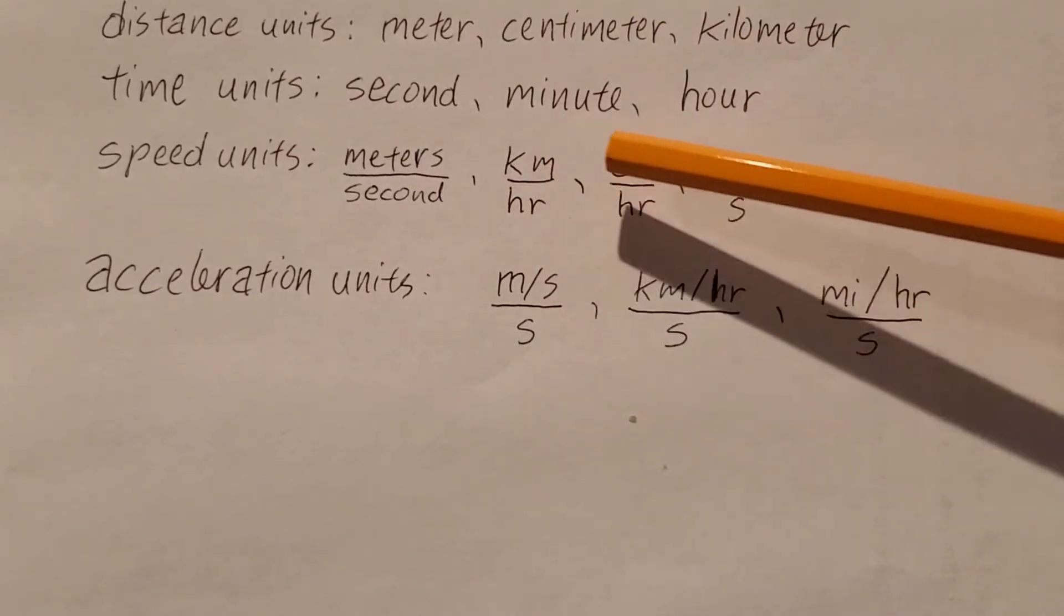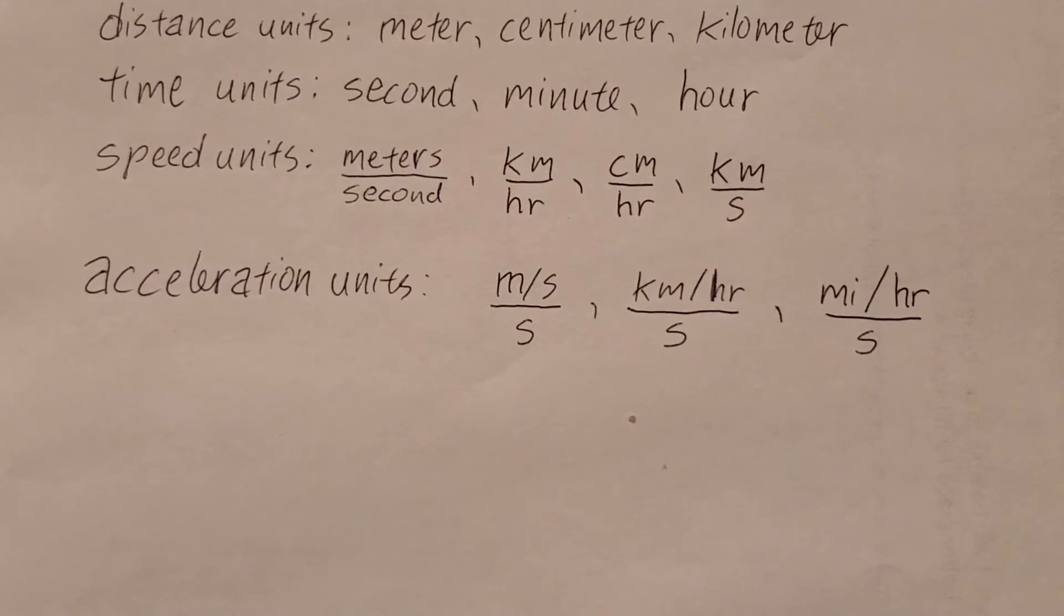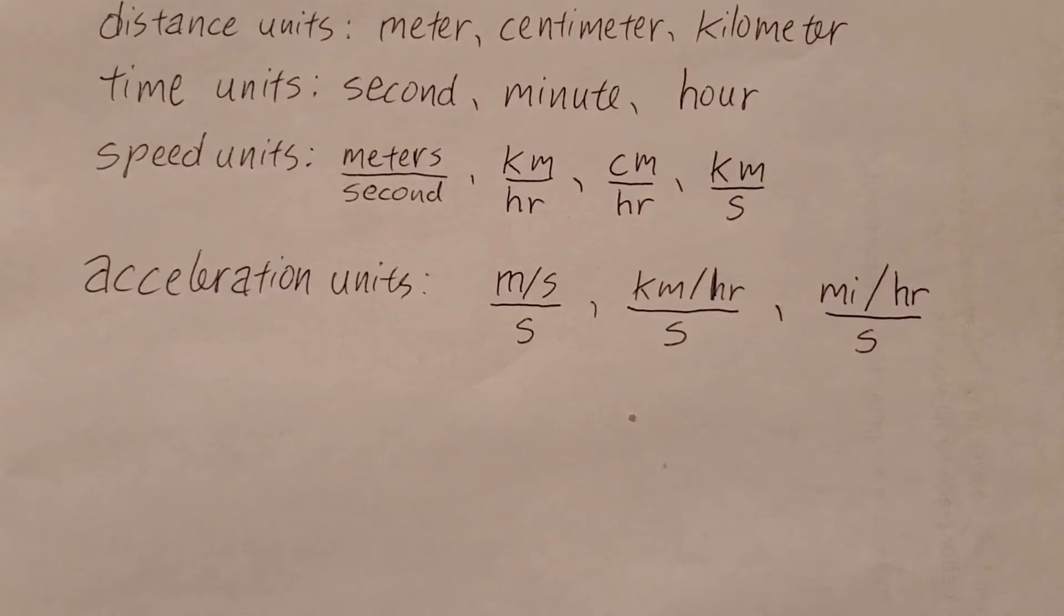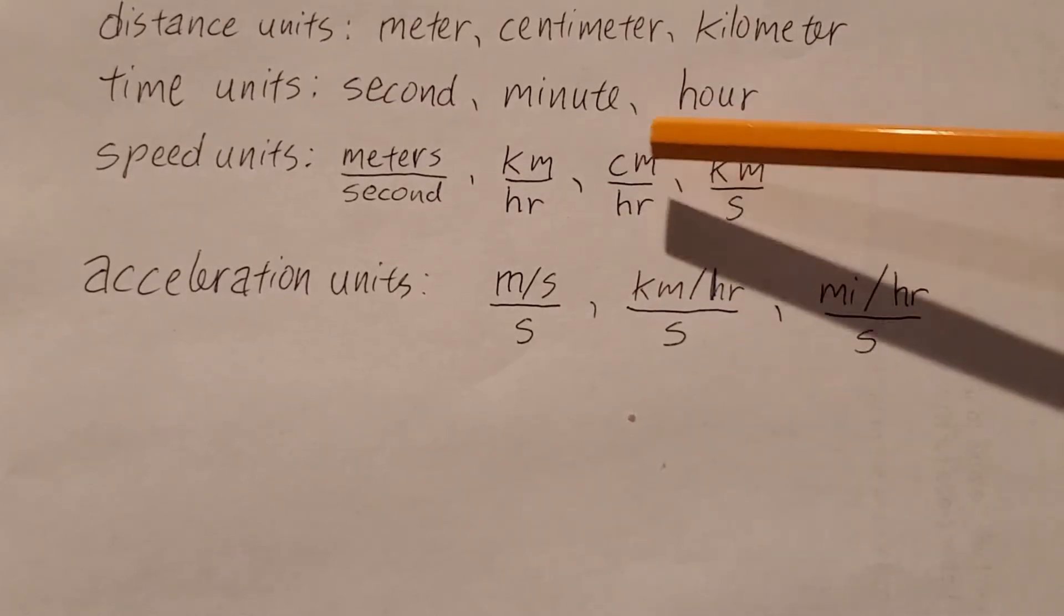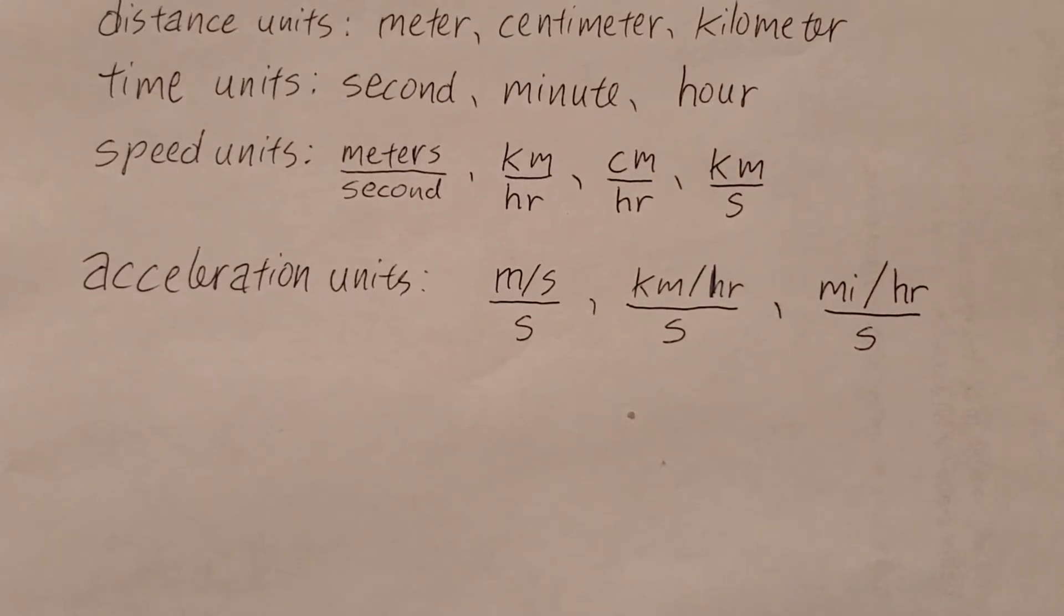For an object that's moving really slow, we could have something like centimeters per hour. An hour goes by, you've moved a centimeter. This is really quite slow. At a centimeter per hour, in order to go the distance of a meter, it would take you a hundred hours, which is about four days.